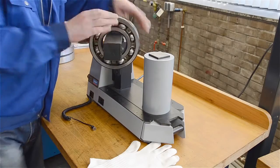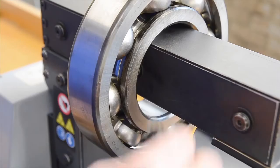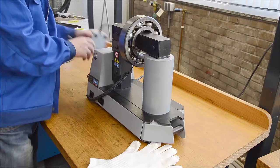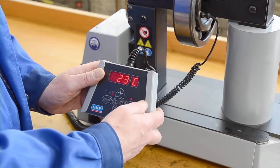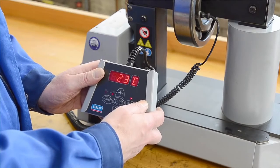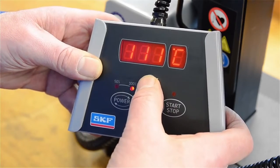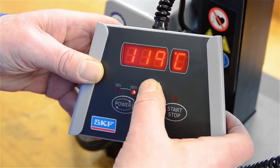Place the bearing on the heater, then place the temperature probe on the bearing inner ring. Press the start button on the remote control and the bearing starts heating. The preset temperature is 110 degrees Celsius, but you can also choose the temperature you want.